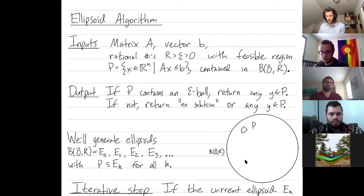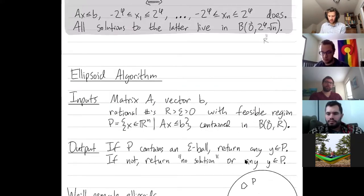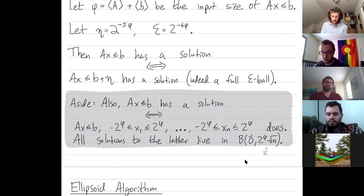Or this implementation might return a point. But in practice, when you set up your inputs correctly, this is the feasible region we'll apply the ellipsoid method on. And in practice, if it has any solution, then it has indeed a full epsilon ball solution.